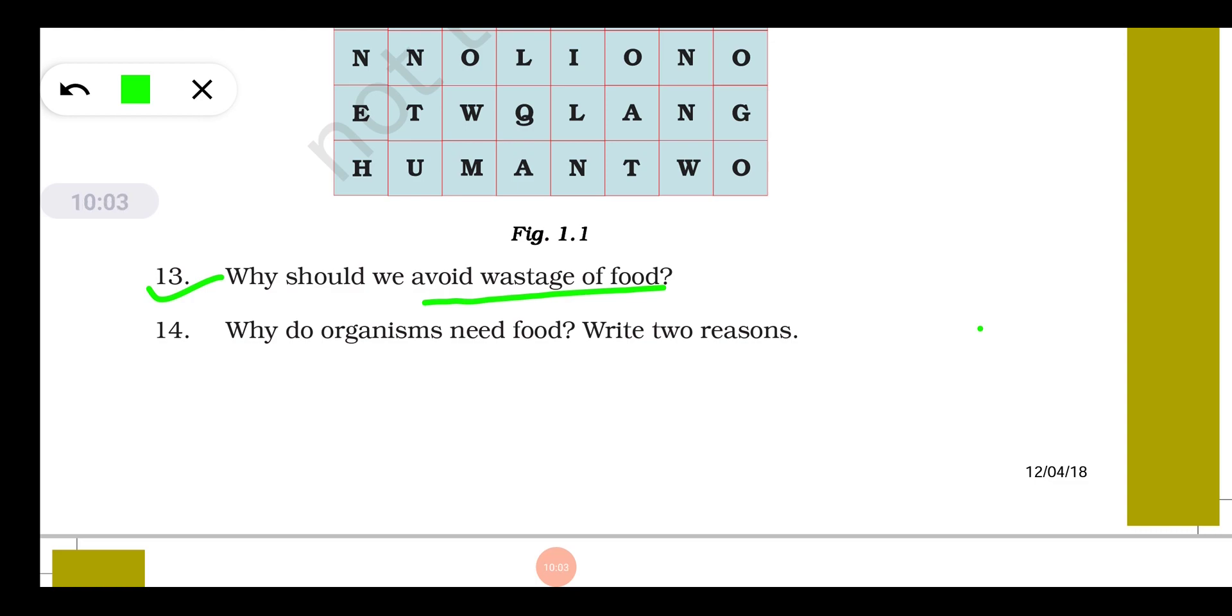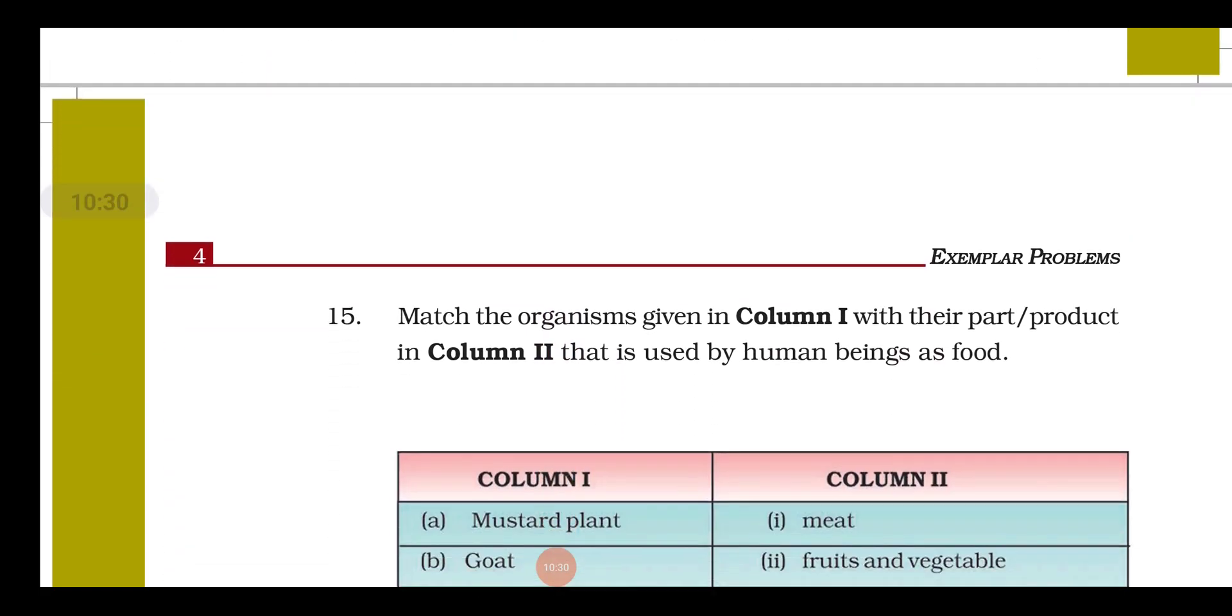Question number fourteen: why do organisms need food? Organisms need food to get energy, number one, due to which we are able to do our daily routine work. Number two, it is required for proper growth and development of our body. And number three, it helps to develop the immunity of our body. Immunity means ability to fight against diseases, so food has to protect us against many diseases also.